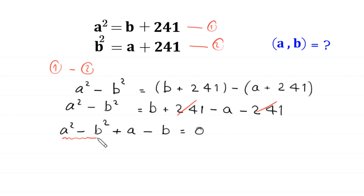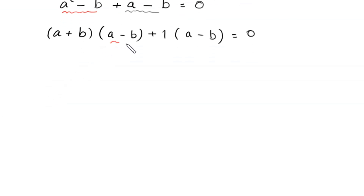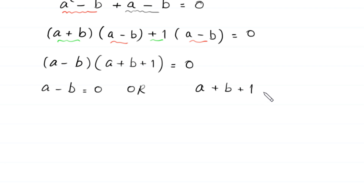Now, a squared minus b squared factors as (a plus b)(a minus b), and from the remaining terms plus a minus b we can factor out plus 1, leaving (a minus b) equal to 0. This a minus b is a common factor, so we factor it out, leaving (a minus b)(a plus b plus 1) is equal to 0.